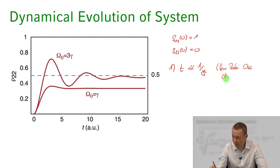And then for longer time evolutions, t much larger than 1 over γ, kind of these Rabi oscillations will be highly damped and we're just going to approach a steady state value of our two-level atom.